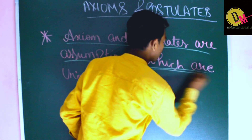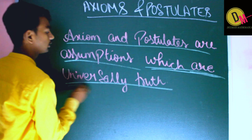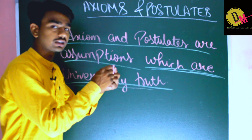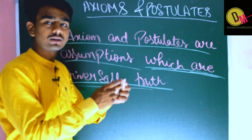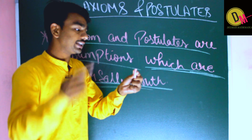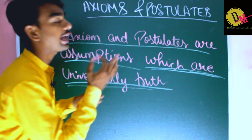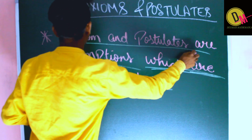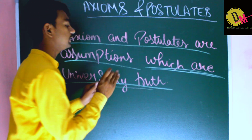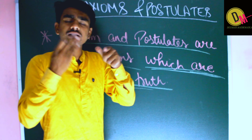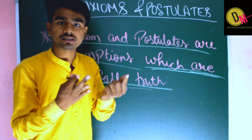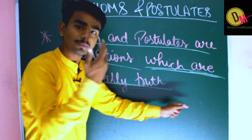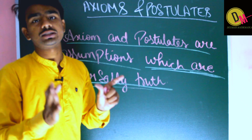Which are universally true — universally means something that is always true. For example, like chocolate is sweet, or a border is a border — these are things that are universally accepted as true. So axioms and postulates are assumptions which are universally true.